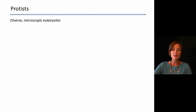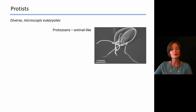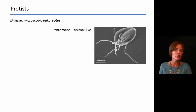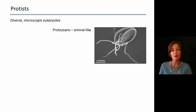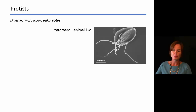As far as what groups protists include, there will be some that are going to be very animal-like. These will be called protozoans, and one of the reasons we consider them to be animal-like is because they're heterotrophic for the most part and also very mobile.